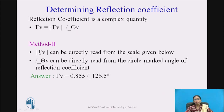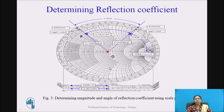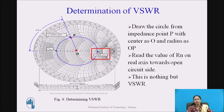In Method 2, the magnitude of the reflection coefficient can be directly read from the scale given below the chart, and the angle theta-V can be read from the circle marked as angle of reflection coefficient. You can measure length OP and mark the same length on the respective scale — on the reflection coefficient scale to read magnitude, or on the VSWR scale to read VSWR directly.